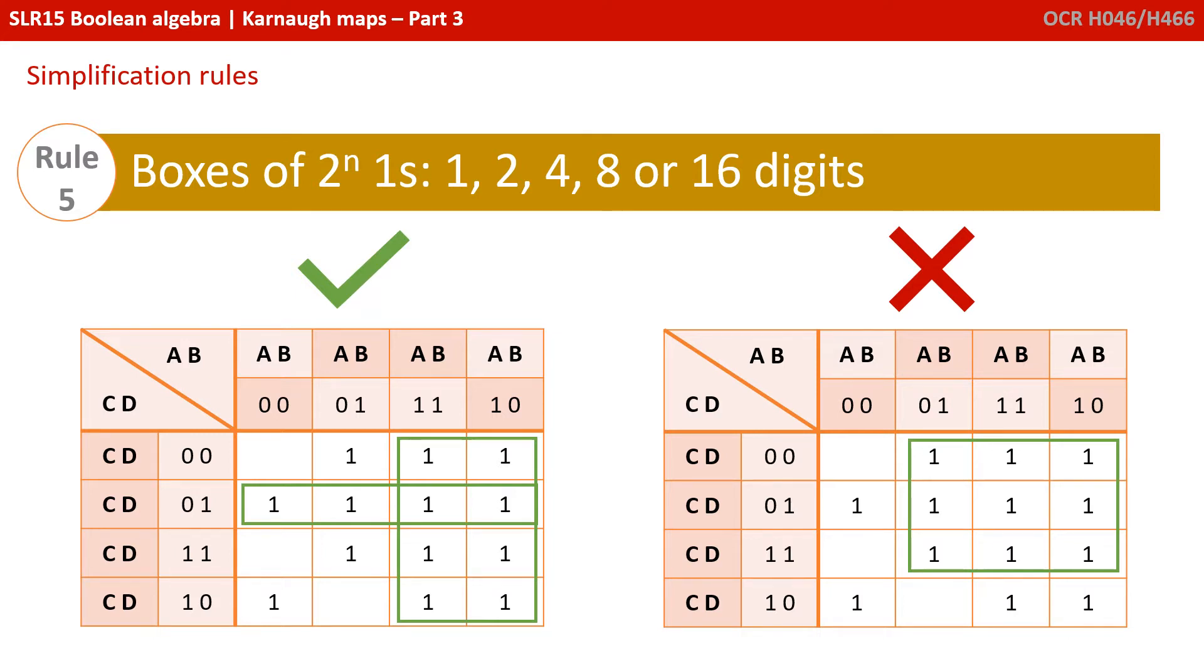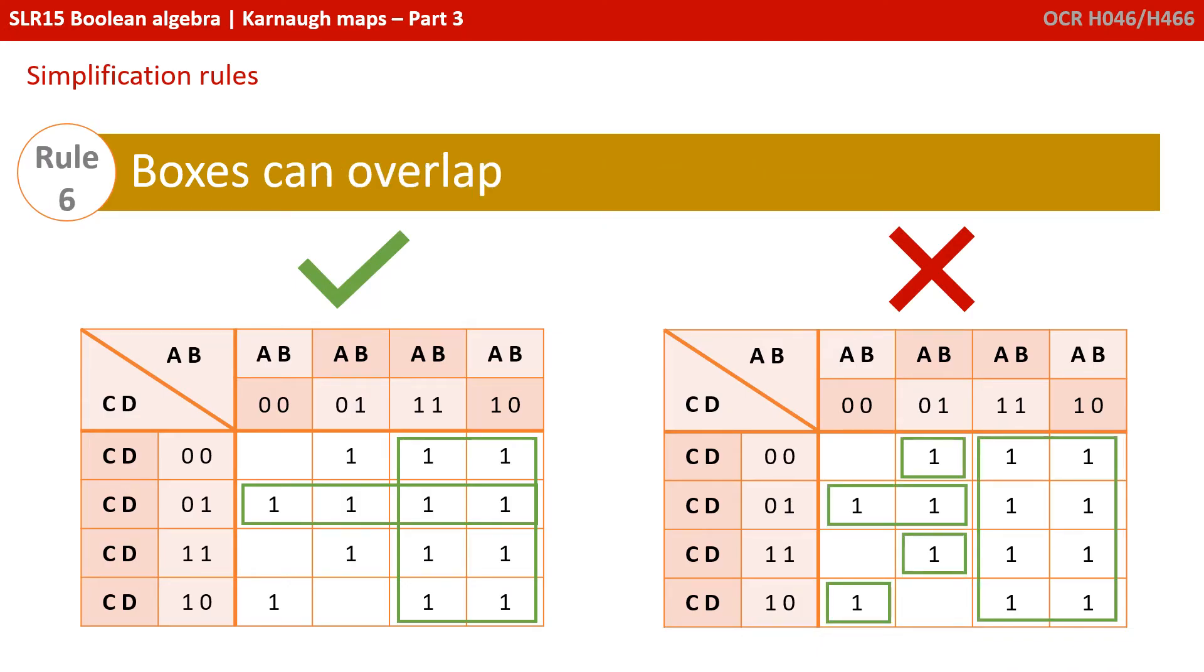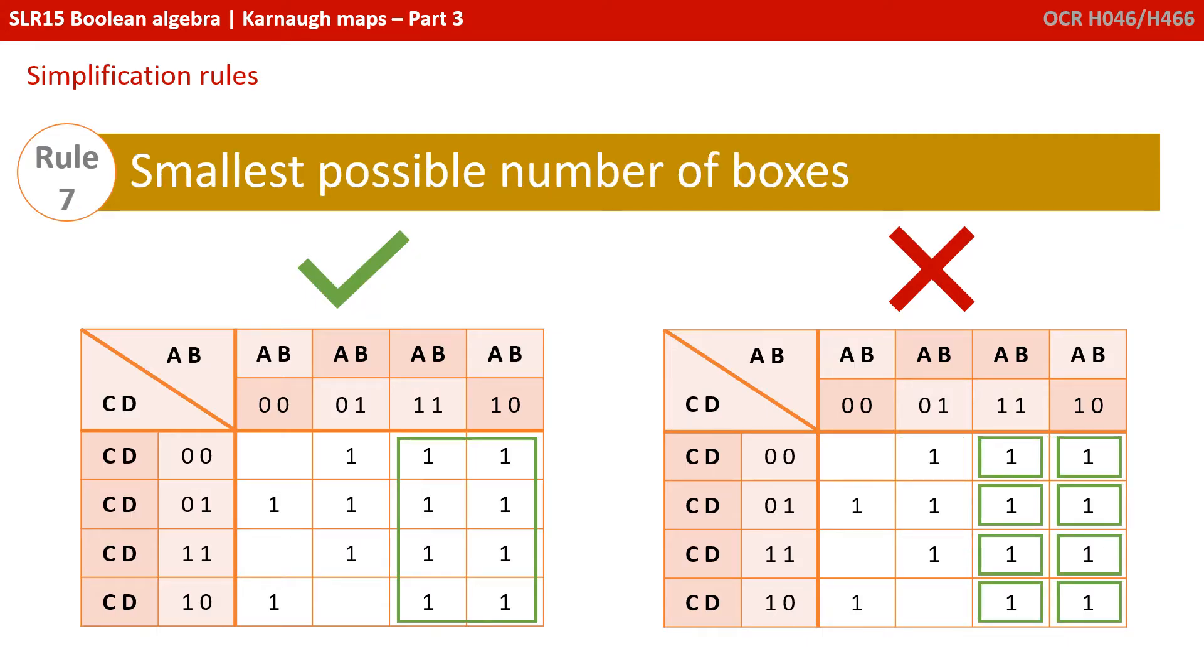Now, boxes must be 2 to the n 1s. So, in other words, you can have a box of 1 1, 2 1s, 4 1s, 8 1s or 16 1s. But we couldn't have a box of, say, 7. It's 2 to the n. Boxes are allowed to overlap. This becomes very important, and you'll see that later. And we should try to aim for the smallest possible number of overall boxes to maximize the simplification of our finished expression.